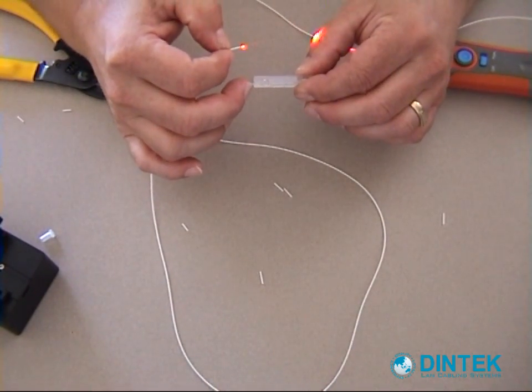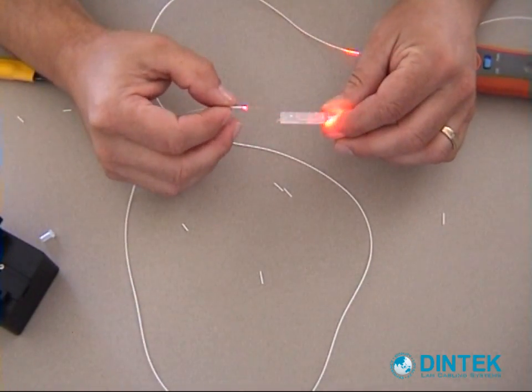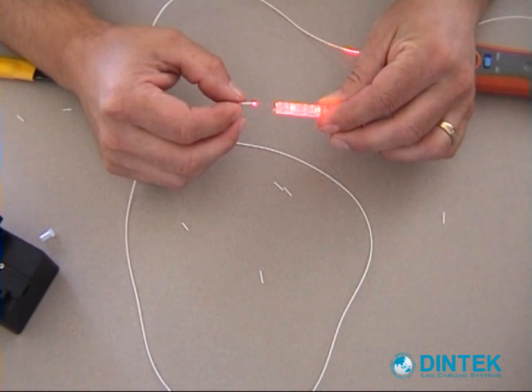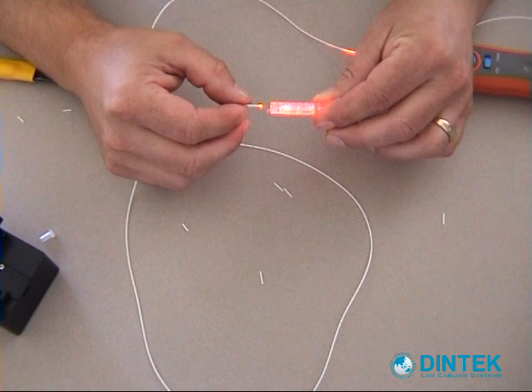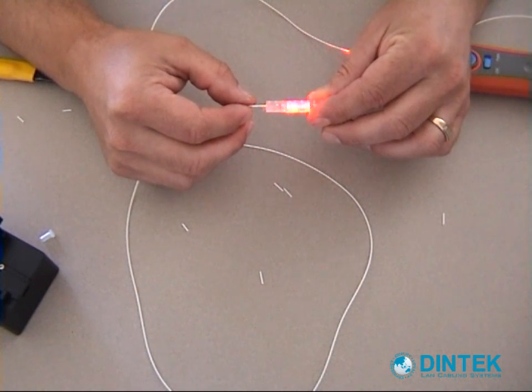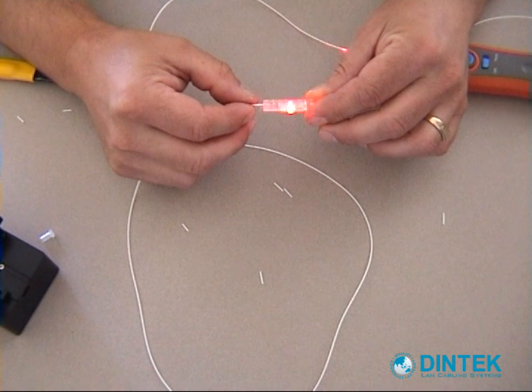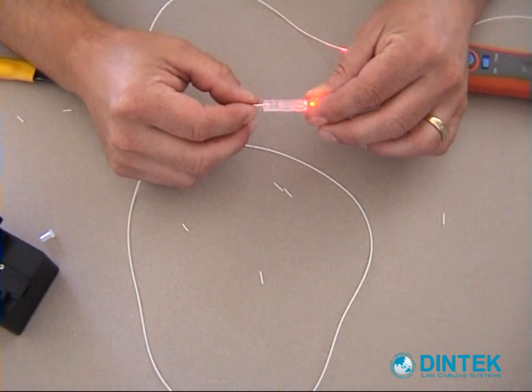Then gently inserting it in. Don't need to force it. Once you find the hole just gently push it in. It goes all the way. And you will see the light, see the light disappearing there. That's where the two ends of the fiber are now touching.